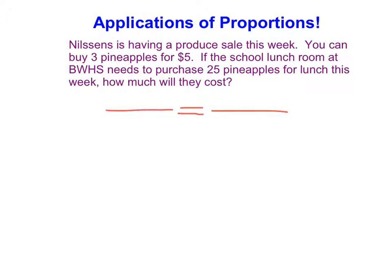So you can buy 3 pineapples for $5. So I have 3 pineapples for $5. And the school lunchroom needs 25 pineapples, but doesn't know the cost. So there we're able to set up a proportion.